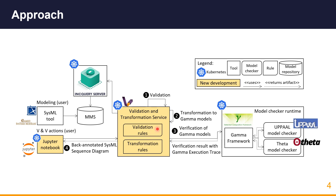In the second transformation phase, we are transforming the SysML models to a so-called Gamma model. Gamma is a state chart validation and verification framework with its own language for composing state charts. Therefore, we transform the SysML state chart to a Gamma state chart, and the reachability properties are transformed to a Gamma property language model. After the transformation is done, we forward it to the model checker runtime.